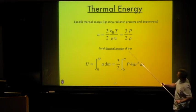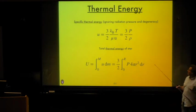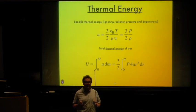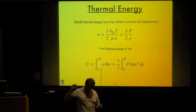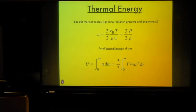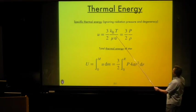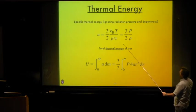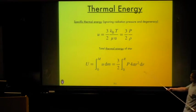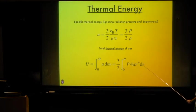We start by writing an expression for the specific thermal energy of stellar material. For an ideal monatomic gas, each particle has three degrees of freedom in three dimensions, so each particle has thermal energy (3/2)kT. Dividing by the mean mass per particle μu, we find that the specific thermal energy — the internal energy per unit mass — is just (3/2) times the ratio of pressure to density. Integrating over the mass of the star gives the total thermal energy U = (3/2) times the volume integral of the pressure.